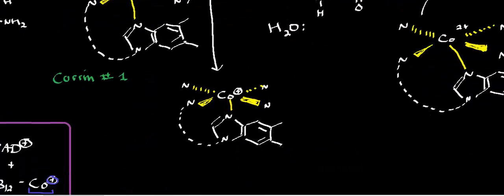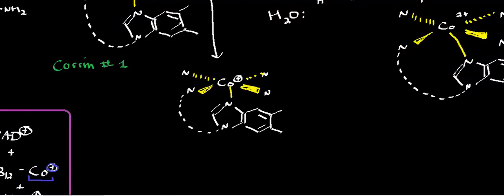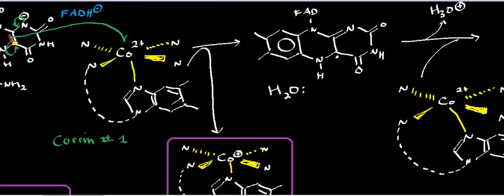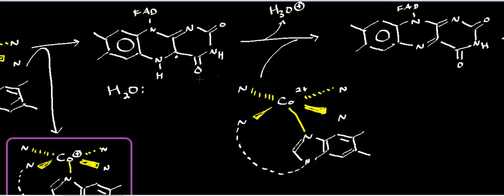And notice what that gives us is our first product right here: it's a corin ring system where B12, where the cobalt is in the one plus oxidation state, which is exactly what we want. Now the next step is going to involve a proton transfer to regenerate FAD. So there's a water in the active site and we're essentially going to deprotonate here and that's going to reform the Schiff base. Now, if I reform the pi electrons right here, what that essentially does is that kicks off this electron. And that electron essentially is going to go on to the next corin, the next cobalt.